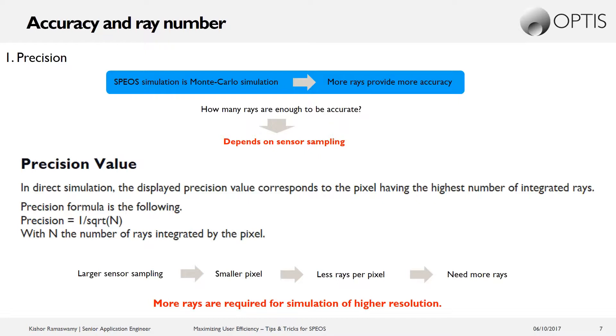But the question always is how many rays is enough to give an accurate simulation? And the answer essentially comes down to the sampling of the sensor and also what sort of precision is necessary for a particular simulation. So you can think of it as a particular pixel of a sensor. The more rays that strike that pixel, the more precise its value will be. If it has only one ray in the result, it won't have a very reliable representation of the value.